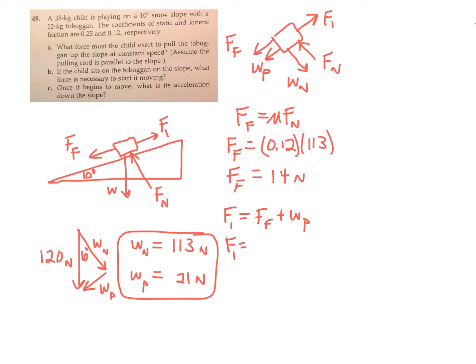F sub 1 must equal 14 plus 21. So F1, the pulling force, is roughly 35 newtons up the ramp.